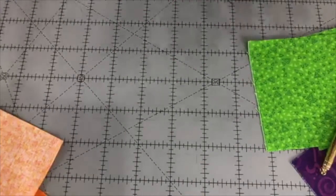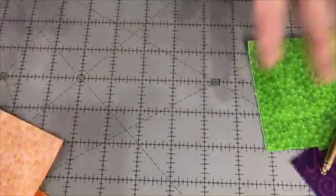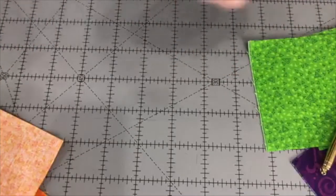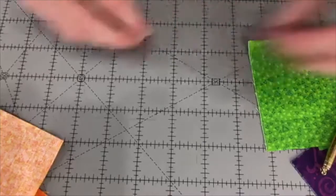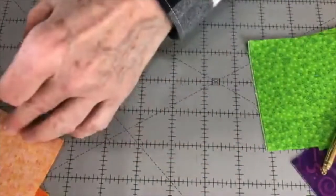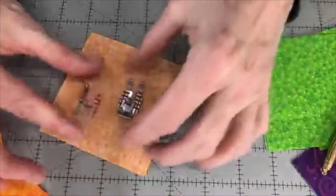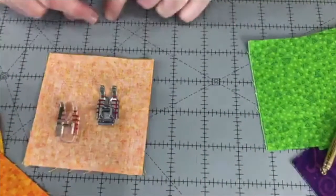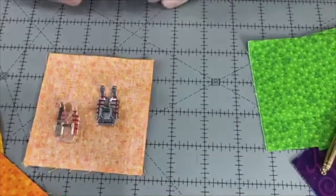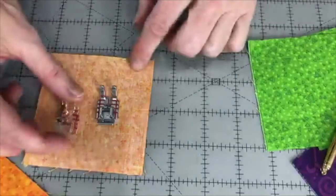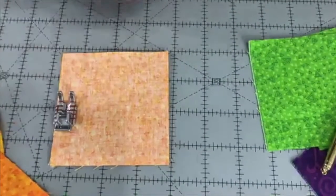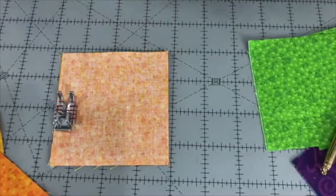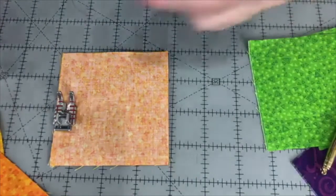And tip number one is to get your machine all set up, right? So whether that means putting on maybe your quarter inch feet. Maybe you like to use a quarter inch foot on your machine. These are the quarter inch feet from my Viking machine. And of course, what you can do with this is when you're sewing, you just line up the edge of your fabric with the edge of your quarter inch foot. And that works really well for some people.